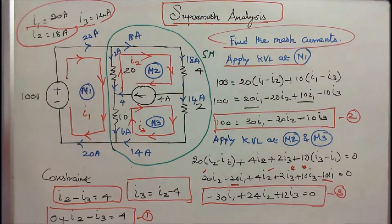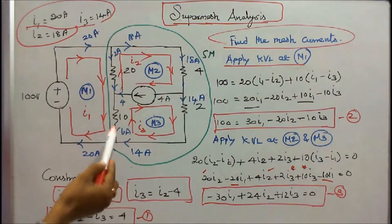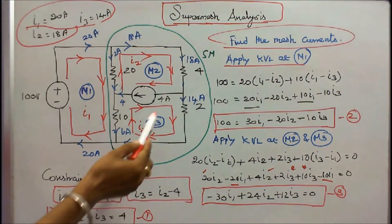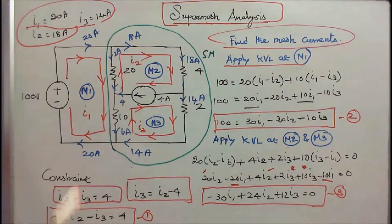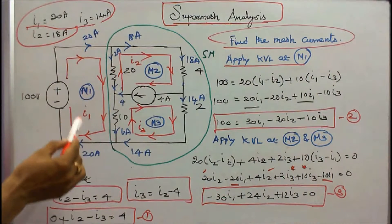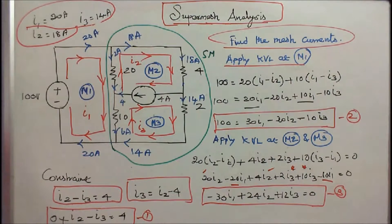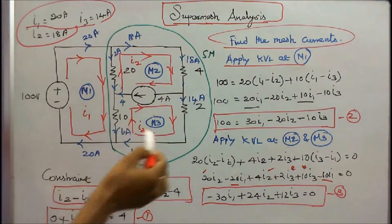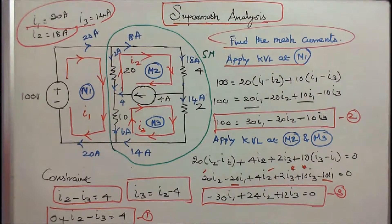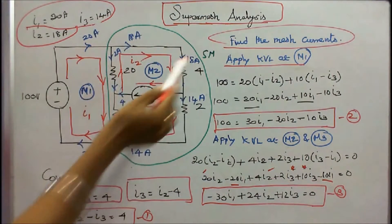In this class we work out five problems on super mesh analysis. Problem number 1: four resistors — 20 ohm, 4 ohm, 10 ohm, 2 ohm — one current source of 4 amps, and one voltage source of 100 volts, all connected as one figure. The question is: find the mesh currents. The network consists of three meshes: mesh 1 with current I1, mesh 2 with I2, mesh 3 with I3. I can't apply Kirchhoff's voltage law because the 4 amp current source is connected between M2 and M3, therefore I consider M2 and M3 as a super mesh.